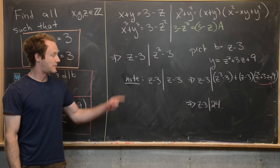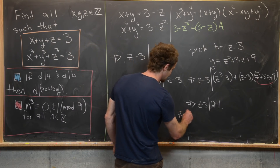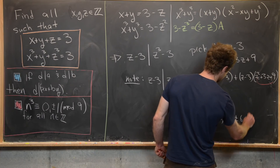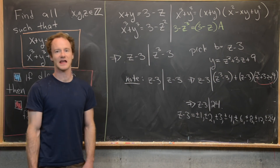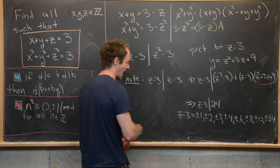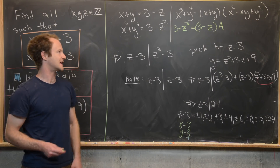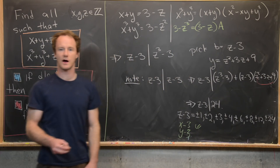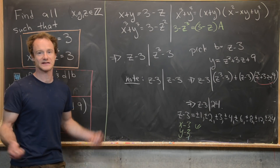The fact that z minus three divides 24 gives us a bunch of possibilities for z: z minus three equals plus or minus one, two, three, four, six, eight, twelve, or twenty-four. Adding three to both sides gives all possibilities for z. There was nothing special about z here — the same argument applies to x and y, so x minus three and y minus three are in this same set of divisors of 24, giving only finitely many possibilities for x, y, and z.